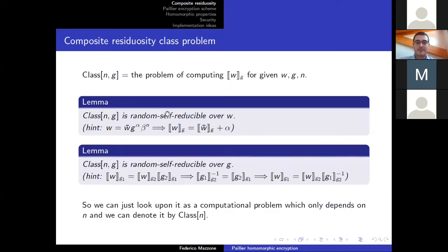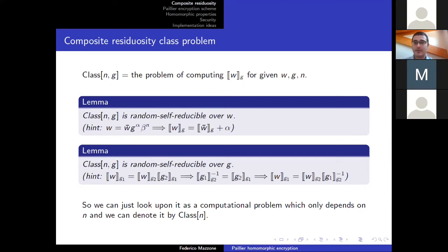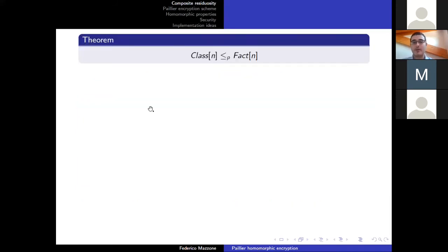These two lemmas tell us that CLASS(N, G) is not really a problem on W and G — we can just see it as a computational problem on N, and denote it simply by CLASS(N). This problem is fundamental for building the decryption function of the Paillier cryptosystem. In particular, we will see one result that relates the problem CLASS(N) to another famous problem: the problem of factorizing N. We can prove that CLASS(N) can be polynomially reduced to the factorization of N — in other words, if we are able to factorize N, then we are able to solve CLASS(N).